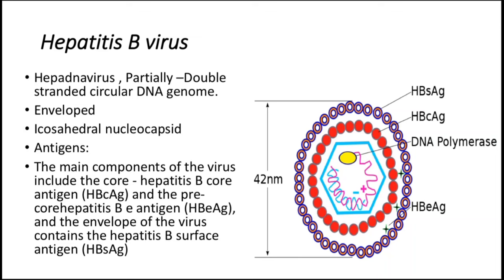Hepatitis B is usually asymptomatic or limited illness with fever and jaundice for days to weeks. It becomes chronic in up to 10% of patients and may lead to liver cirrhosis and hepatocellular carcinoma. Hepatitis B virus has a DNA-dependent DNA polymerase and only one serotype. There is a vaccine for hepatitis B viruses. It usually has three different types of particles: the variants, the spheres, and the filaments.